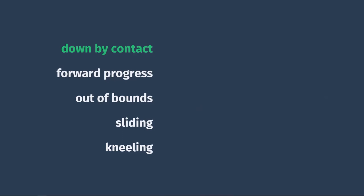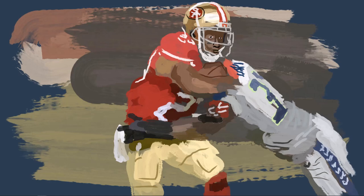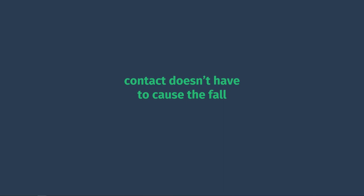The first way is the most common: a player is down by contact. This means that a defensive player has touched the ball carrier in some way, and then subsequently some part of the ball carrier's body other than his hands or feet makes contact with the ground. This is probably what you picture when thinking about tackling — one guy trying to pull down the guy with the ball while he tries to stay on his feet. Usually the defensive player will give the ball carrier a big bear hug and haul him to the ground, or push him hard enough to make him lose his balance.